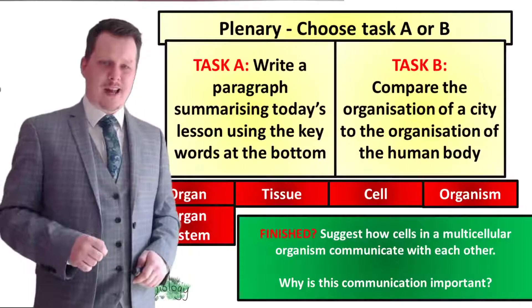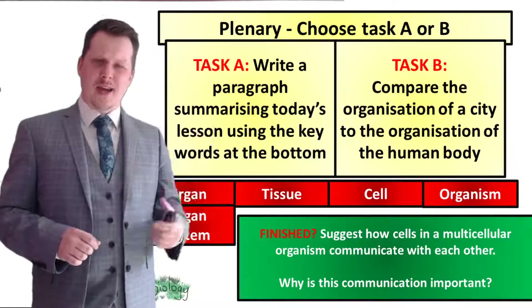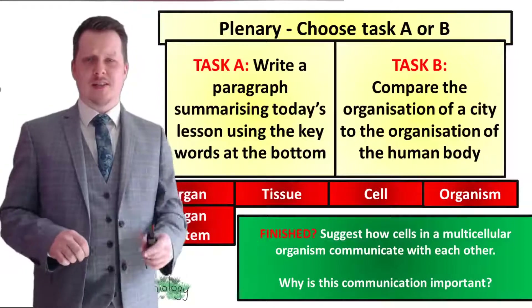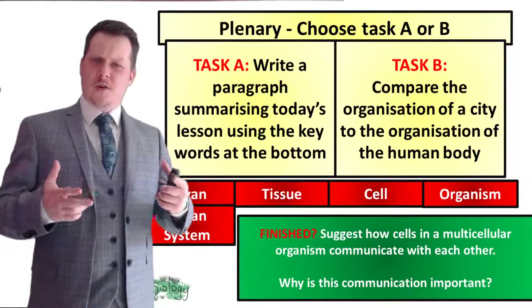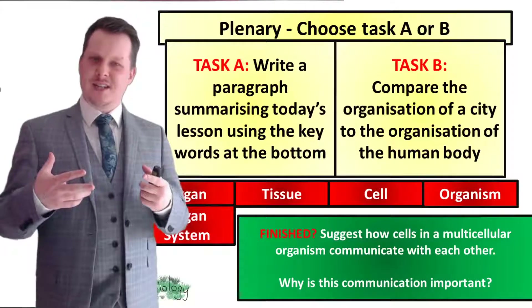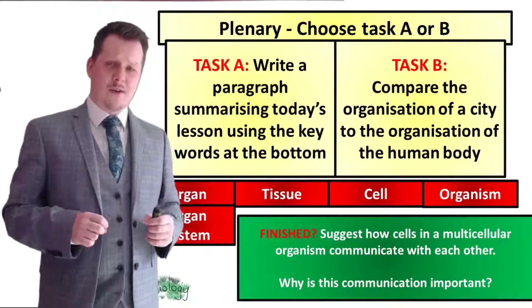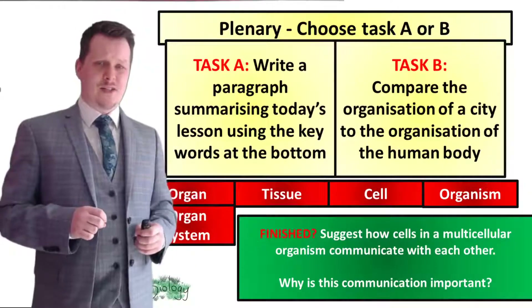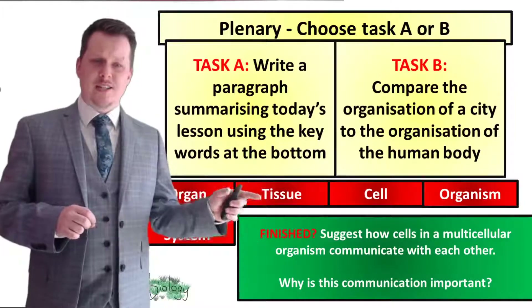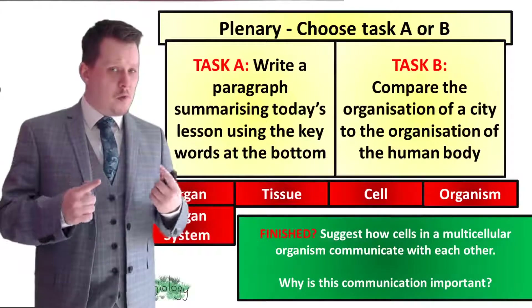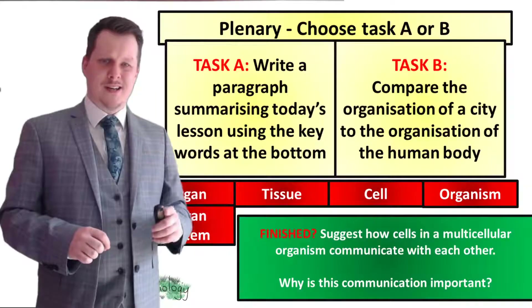We've got one more thing to do before we wrap this lesson up and you get to choose either task A or task B. In task A, you can write a paragraph summarising today's lesson using the words in the red boxes. Or in task B, you could compare the organisation of a city to the organisation of the human body. Only do task B if you didn't do it earlier as a challenge activity. If you're finished and still need more of a challenge, you can suggest how cells in a multicellular organism communicate with one another, and try to explain why this communication is important.